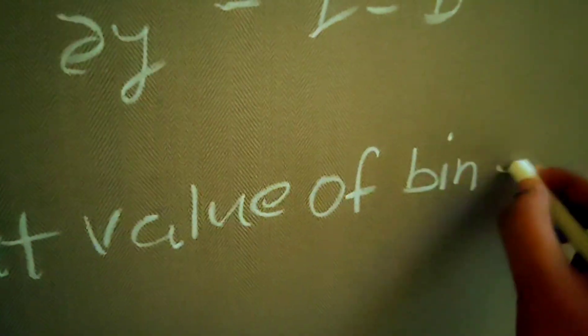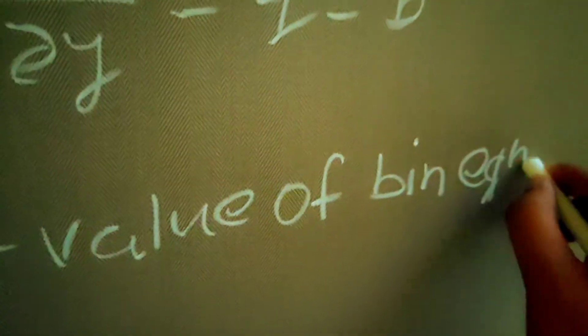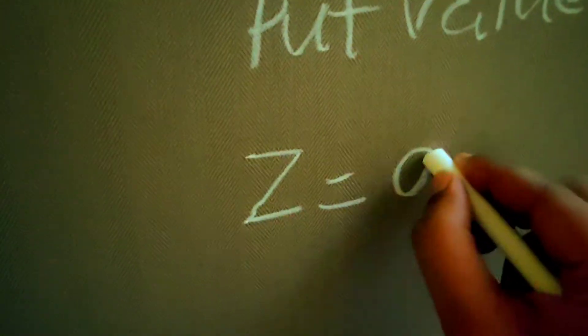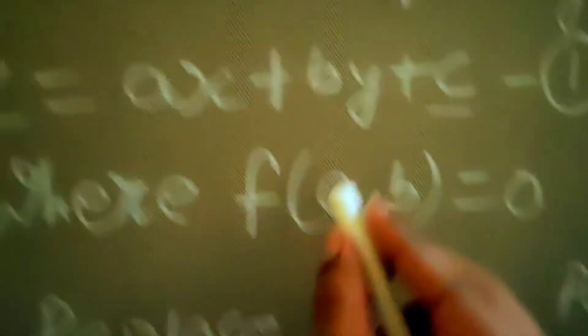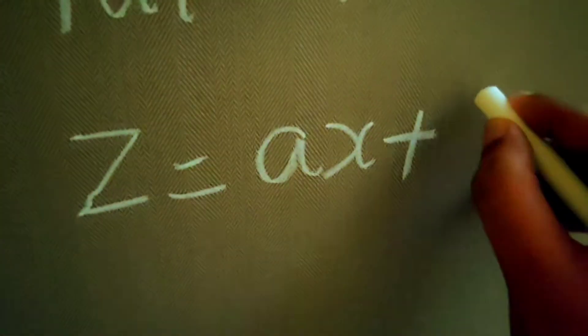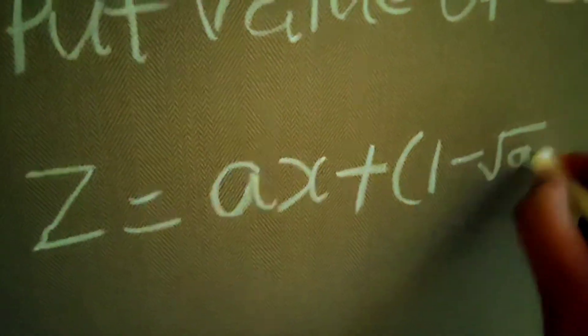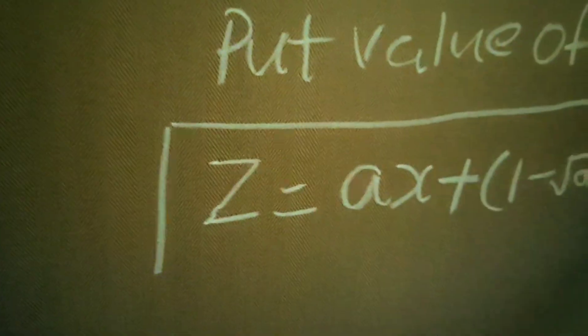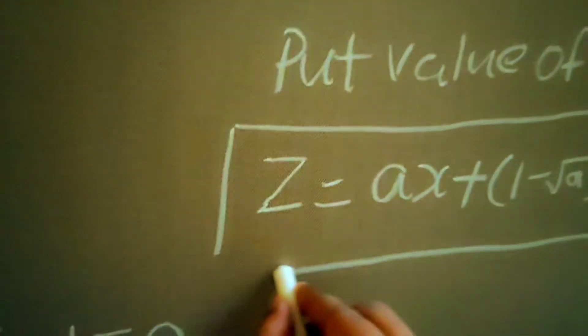Now put the value of b into the solution equation. You will get: z equals ax plus (1 minus root a) whole squared times y plus c. So this is the complete solution of under root p plus under root q equals one.